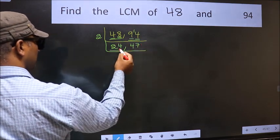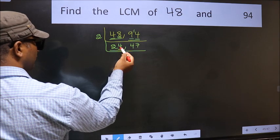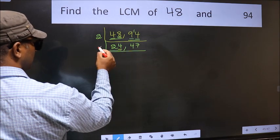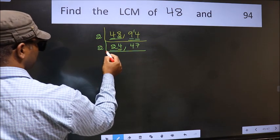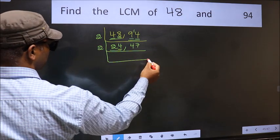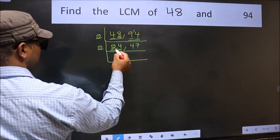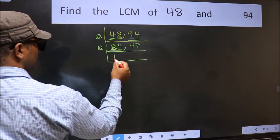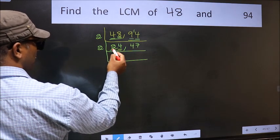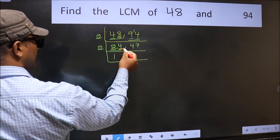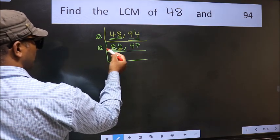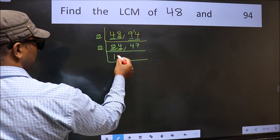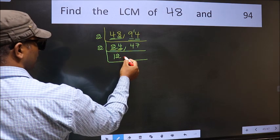Now here we have 24. The last digit is 4, which is even, so take 2. The first number is 2 — when do we get 2 in the 2 table? 2 times 1 is 2. The other number is 4 — when do we get 4 in the 2 table? 2 times 2 is 4.